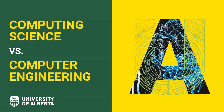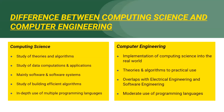So what exactly is the difference between computing science and computer engineering? Computing science is not just about learning the programming languages. It's about the study of the theoretical foundations of data computations and their applications, mainly focused on software and software systems, and the study of building efficient algorithms using multiple programming languages.